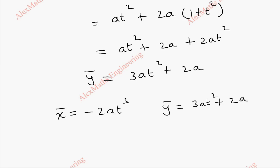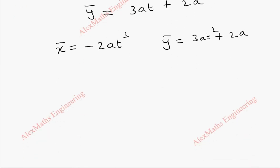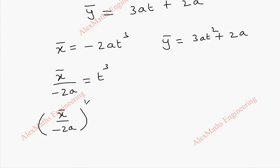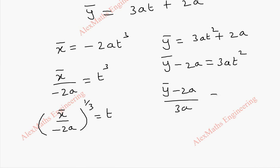By eliminating t, we get the equation of the evolute, which is the locus of the center of curvature. From x̄, we take x̄ divided by minus 2a equal to t³, so (x̄ / (minus 2a))^(1/3) equals t. From ȳ: ȳ minus 2a equals 3at², so (ȳ minus 2a) divided by 3a equals t², giving ((ȳ minus 2a) / 3a)^(1/2) equals t.